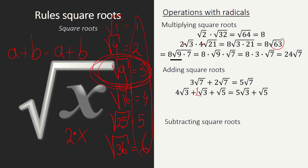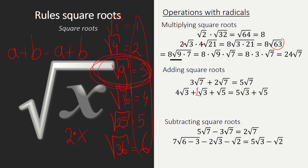Subtracting square roots works the same way. So 5√7 minus 3√7 is just 2√7 because they are alike and we subtract the coefficients. For 7√6 minus 3 minus 2√3 minus √2, we know that 6 minus 3 equals 3, so we have 7√3 minus 2√3, which is 5√3 minus √2. We cannot simplify further since they are not alike.